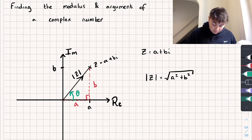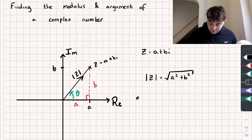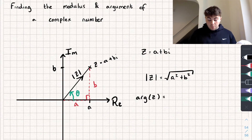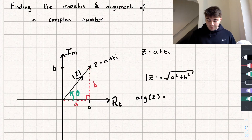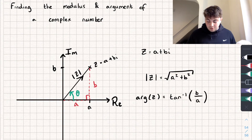The size of that angle, say theta, is my argument. The arg of z is the argument of z, and we write it like this. For that specific example, we could find it by doing inverse tan because we have the opposite and the adjacent. So that could be given by inverse tan of the opposite side b over the adjacent side a.